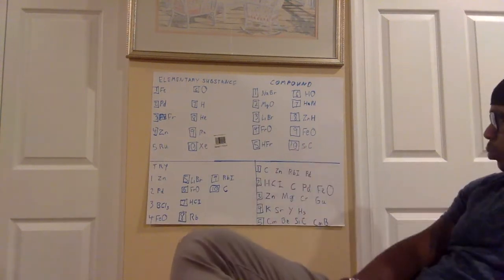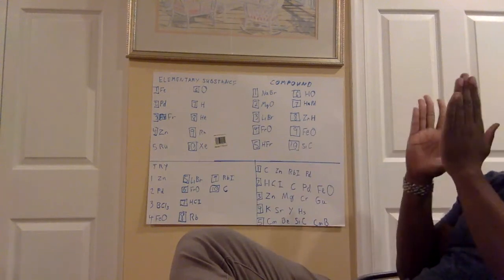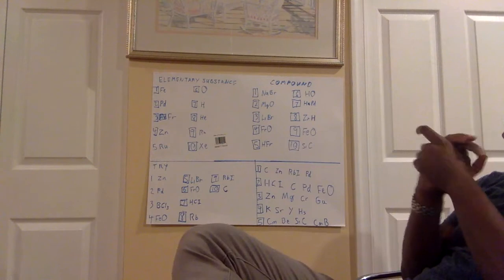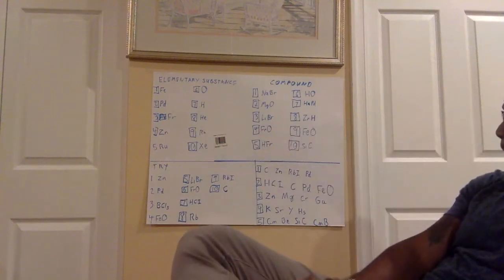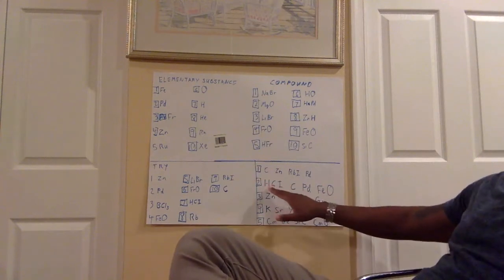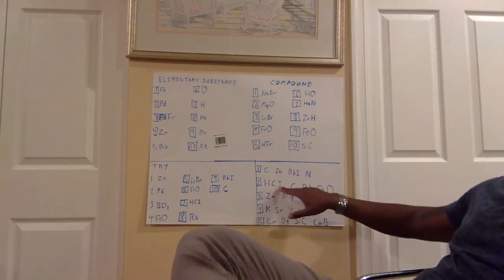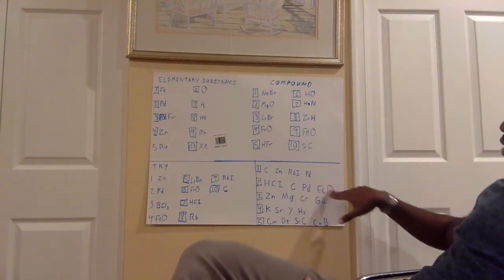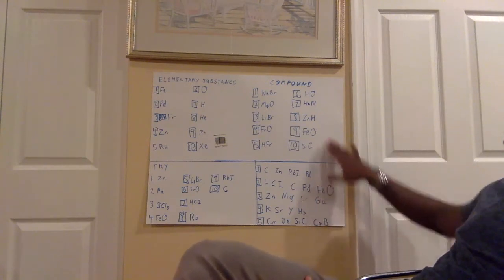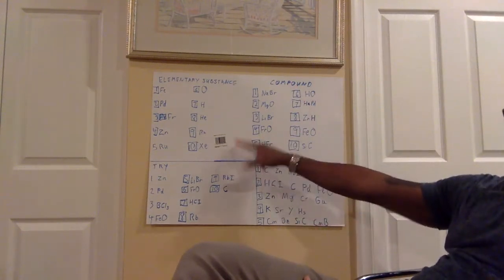Number two: I say HCI and FeO would go under compound, and C and PD would go under elementary substance. Yes, I would be correct. HCI — H is one atom, C is one atom, and I is one atom — all three letters are capital, so this is three separate atoms combined together — a compound. FeO — Fe is iron, an elementary substance on its own, and O is oxygen — but together they are a compound. C by itself — elementary substance. PD by itself — elementary substance.